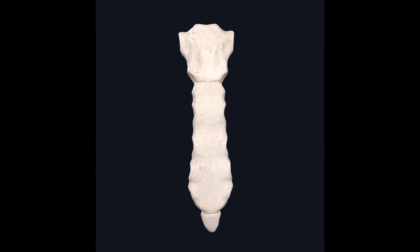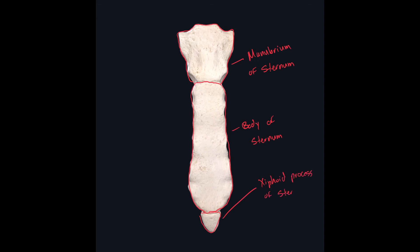Like the rib, the sternum is divided into three different parts. This most superior portion is going to be called the manubrium of the sternum. Just distal, we have the body of the sternum. And the most inferior portion of the sternum is called the xiphoid process. Returning back to the manubrium of the sternum, we have this subtle notch found on the superior part of it, called the jugular notch of the sternum.